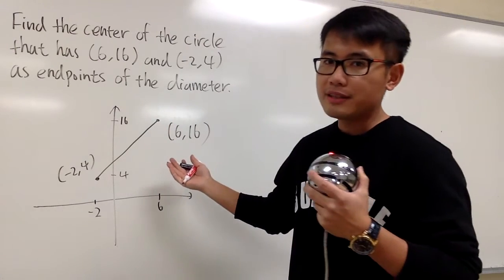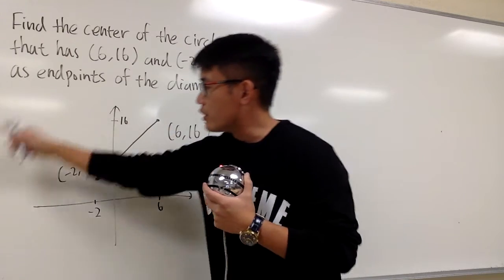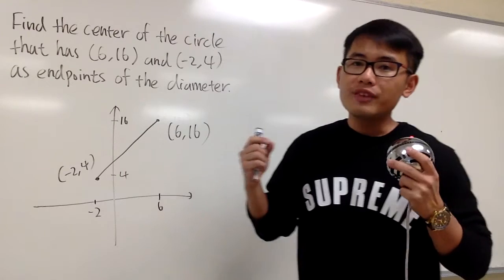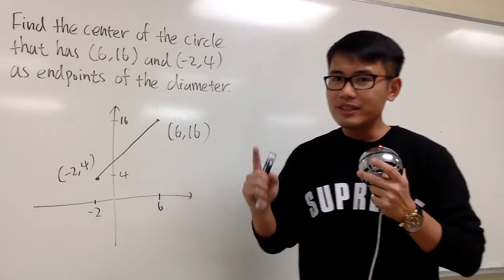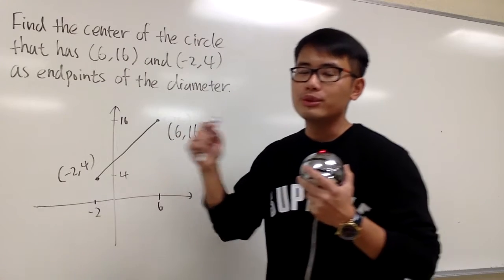And the circle in this case, this is not the center, this is not the center. We are not going to draw the circle this, or that. These two points are the endpoints of the diameter. And diameter, once again, is you go all the way from one end to the other, and pass through the center of the circle.